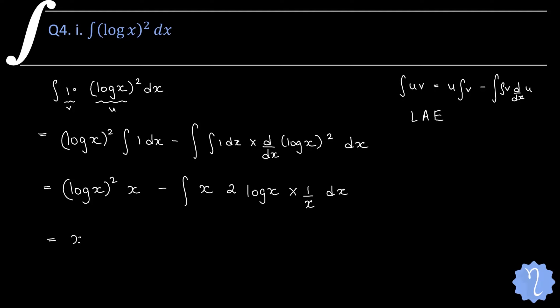So we get x(log x)² minus 2 integration of just log x. Now again we will have to use the same principle. Here also I multiply by 1 — that means 1 multiplied by log x. This is my u and 1 is v. Then we do the same integration by parts process again for this integral.